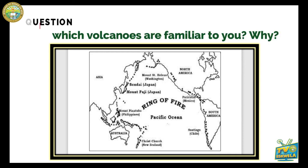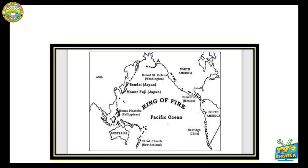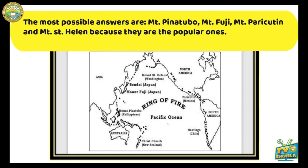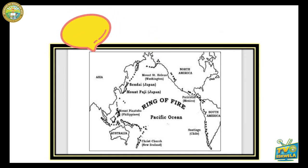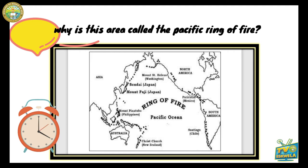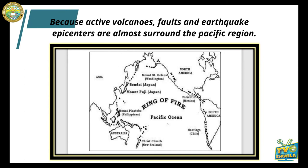Using the map in Figure 2, which volcanoes are familiar to you? The most likely answers are Mount Pinatubo in the Philippines, Mount Fuji in Japan, Mount Paricutin in Mexico, and Mount St. Helens in Washington — because they are the popular ones. Why is this area called the Pacific Ring of Fire? Because active volcanoes, faults, and earthquake epicenters are found almost all around the Pacific region.